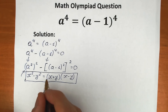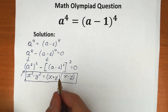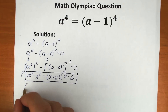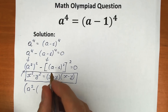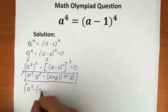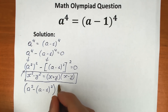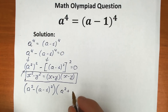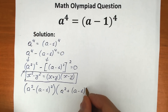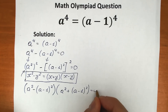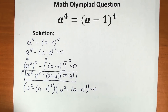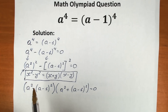So we get a long pair of parentheses. Starting with the minus factor: (a squared minus (a minus one) squared), multiplied by (a squared plus (a minus one) squared), equal to zero. I hope you understand this step and this formula.